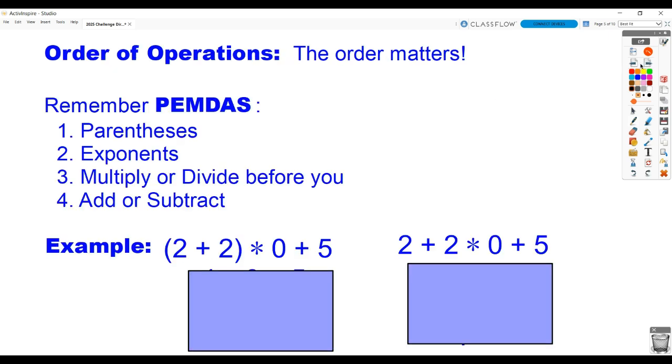Now, does the order of operations actually matter, or is it just something us math teachers do to torture you? No, of course it matters. It makes a difference. If we look at these expressions down at the bottom, they all use the same digits, 2, 2, 0, 5, 2, 2, 0, 5. But notice this one has parentheses around it. That's going to make a difference. Since parentheses is our first step in the order of operations, if I do that step first, 2 plus 2, I get 4. And I brought down the times 0 plus 5. What comes next? Well, I don't have any exponents, so a multiplication or division would come next. So here's my multiplication. What's 4 times 0? It's 0.